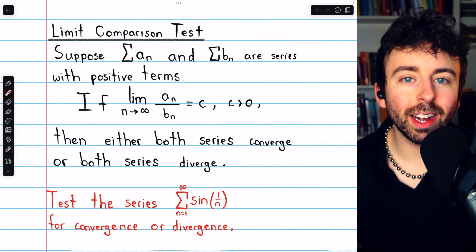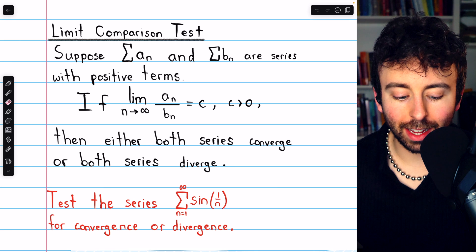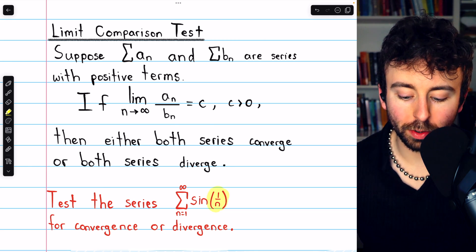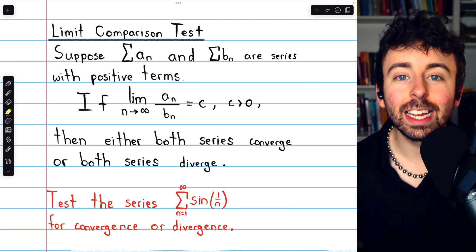Looking at this series, we may think of using the harmonic series for the limit comparison test. I mean, we see the 1 over n right there in the sine function. Let's give it a try.